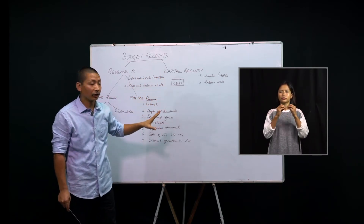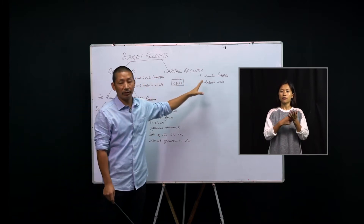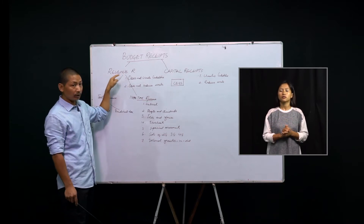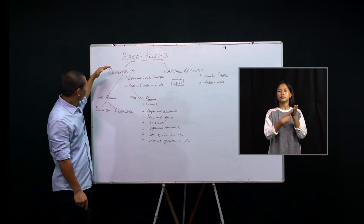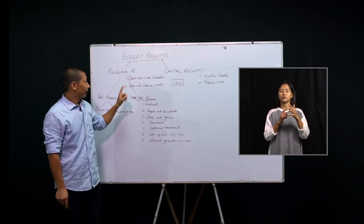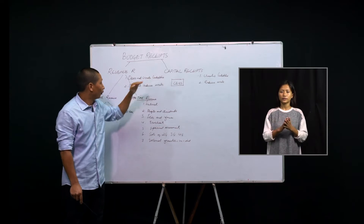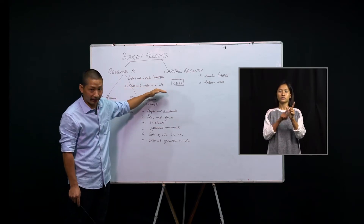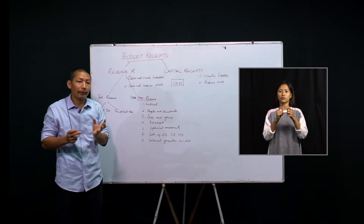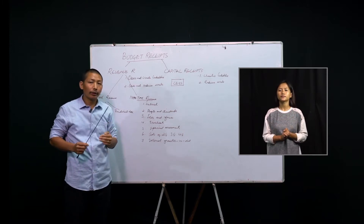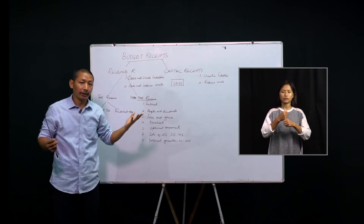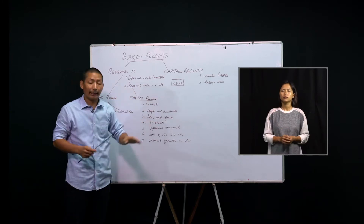When the government is estimating such money receipts from all these sources, that is technically called budget receipts. And therefore, these budget receipts can be classified into revenue receipts and capital receipts. It's very interesting. Government's estimated receipts which neither create liabilities nor lead to reduction in assets will be called revenue receipts. Meaning, the government is estimating some revenue to be received, but they are not creating any liabilities — no burden — and they are also not reducing the assets of the government.